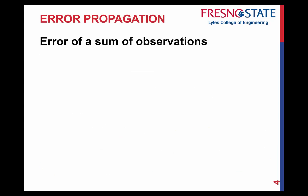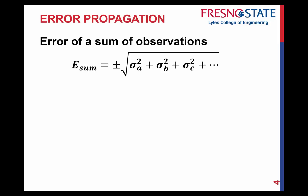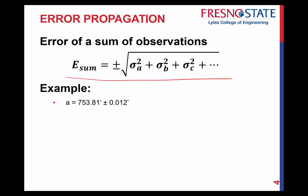So let's say we had a sum of observations — like taking the perimeter of something. If you had a triangle and you measured observation A plus observation B plus observation C, to find the error of that sum, this is your formula: the variance of A plus the variance of B plus the variance of C, take the square root — that equals your total error.